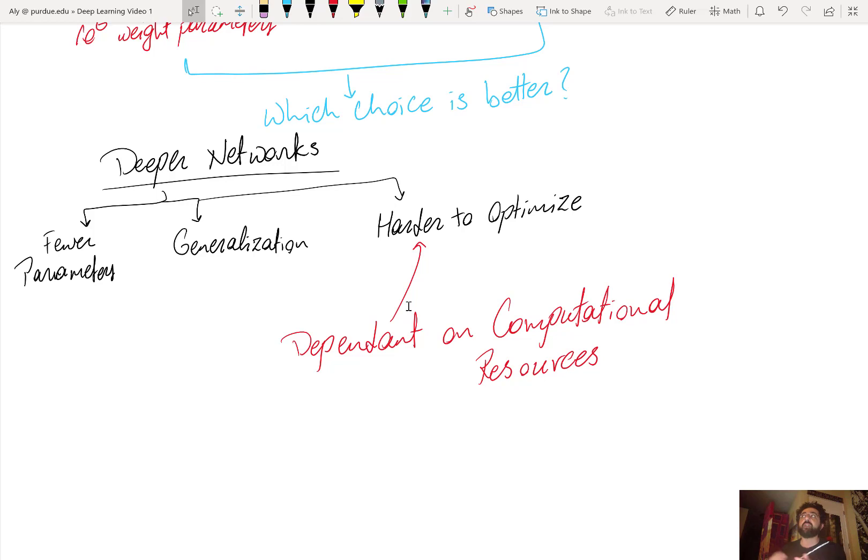If the computational resources are limited, then actually the exploration of the large hypothesis space with the shallower network can be impossible. So in that case, it could even be that the shallower network is harder to optimize, because there are no computational resources available to explore the whole space offered by its parameters. Thank you.